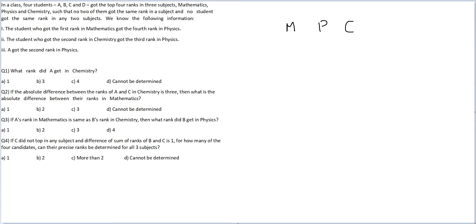The student who got the first rank in Mathematics got the fourth rank in Physics. So first rank in Mathematics and fourth rank in Physics comes together. The student who got second rank in Chemistry got third rank in Physics. Second rank in Chemistry, third rank in Physics.